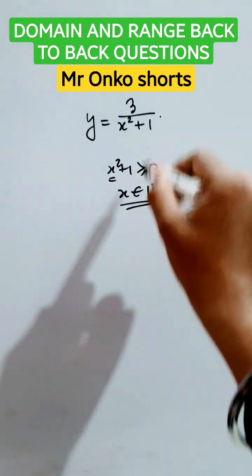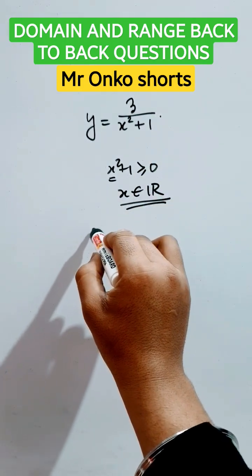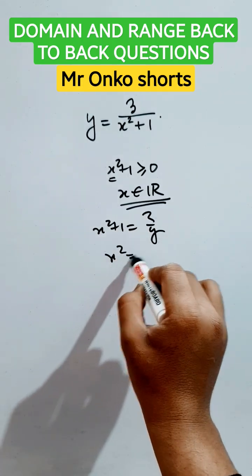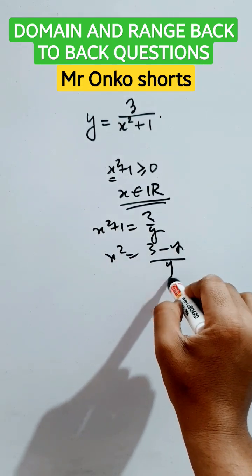The range will be x squared plus one equals three by y, so x squared equals three minus y by y. This is greater than equals to zero since it's squared.